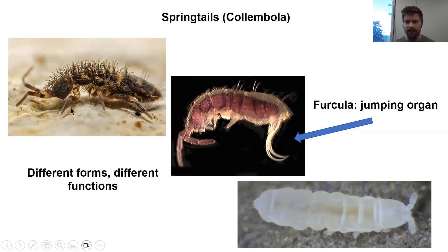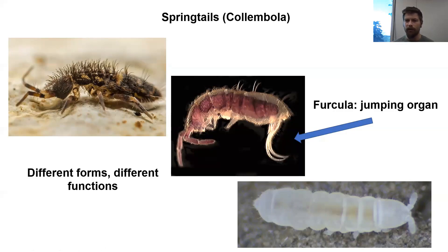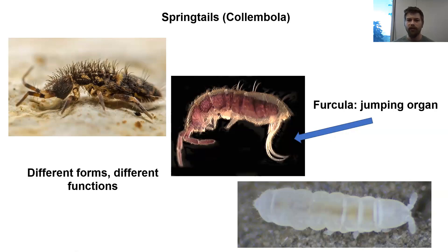You can kind of tell from the three different springtail pictures on screen — this white, eyeless, unpigmented springtail is one that lives deep in the soil profile, whereas this springtail up here that has eyes, hairs, pigmentation, and a very developed furcula is actually living on top of the soil. These springtails are really abundant and live in different areas within the soil profile, which corresponds to what they're actually doing in the ecosystem.